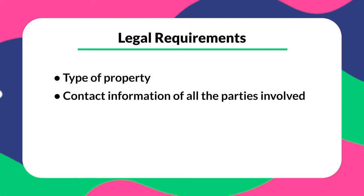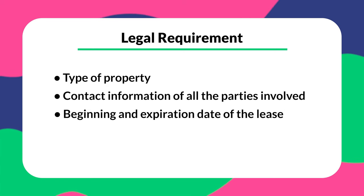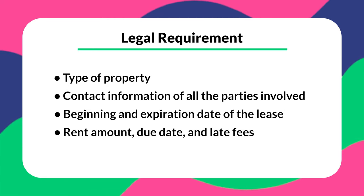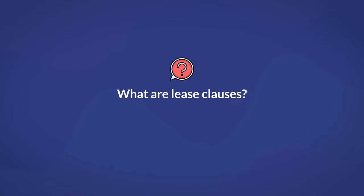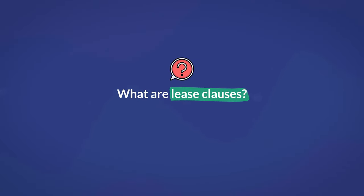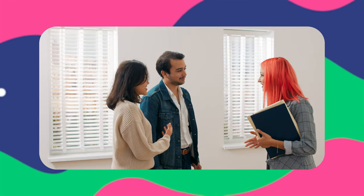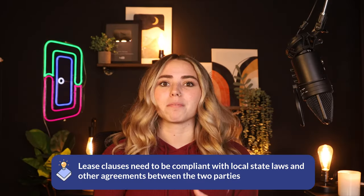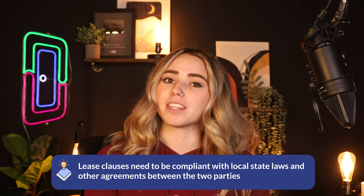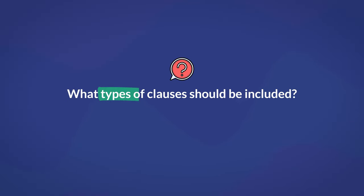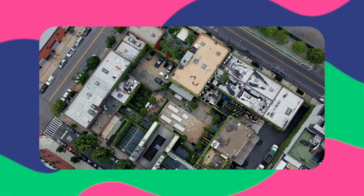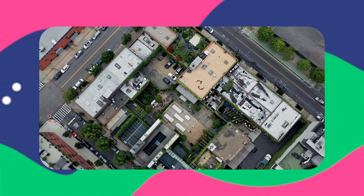The type of property, contact information of all parties involved including each occupant, beginning and expiration date of the lease, the rent amount, due date, and the late fees, and holding over conditions and penalties. Next question: what are lease clauses? A lease clause is a specific part of a contract or rental agreement between the landlord and the tenant. These clauses need to be compliant with local state laws and other agreements between the two parties. There are many lease clauses for tenants and landlords that you can include in the final document, though they may vary depending on local state laws, type of property, and the area. However, there is a list of clauses that you should always consider including.